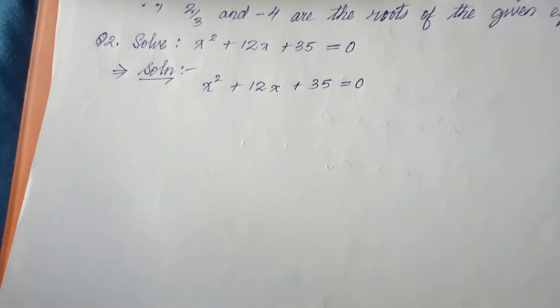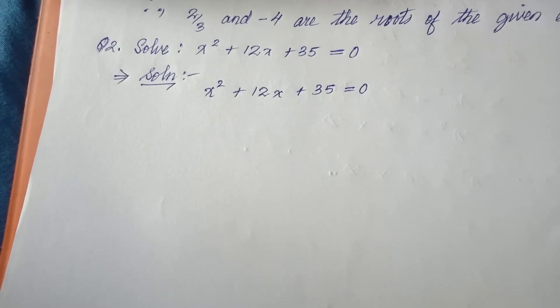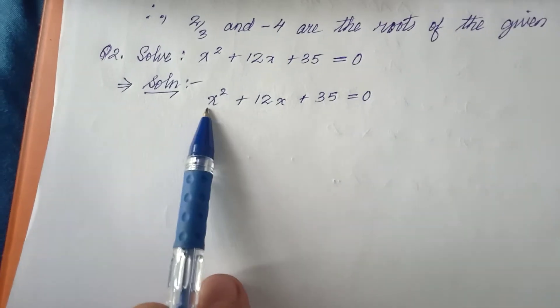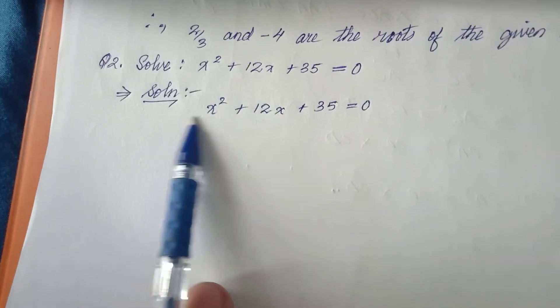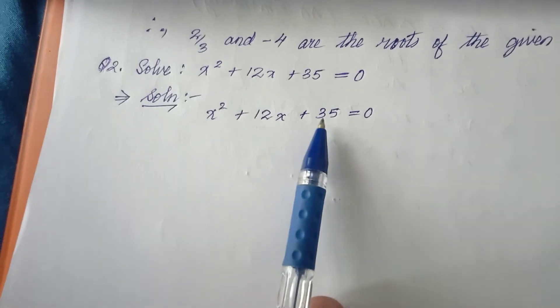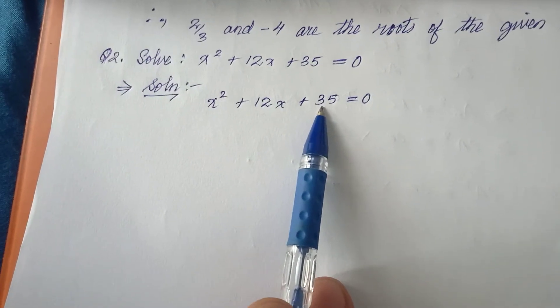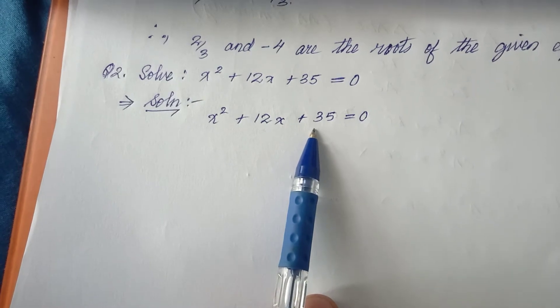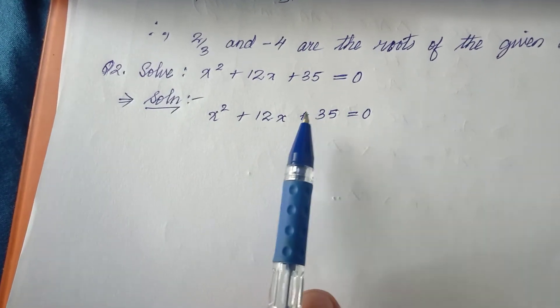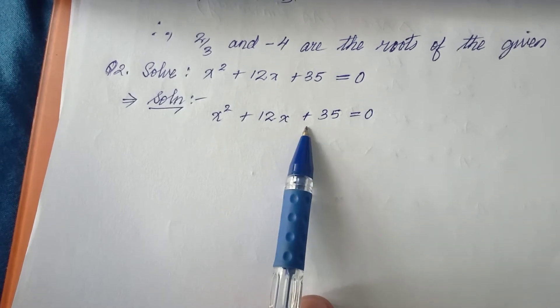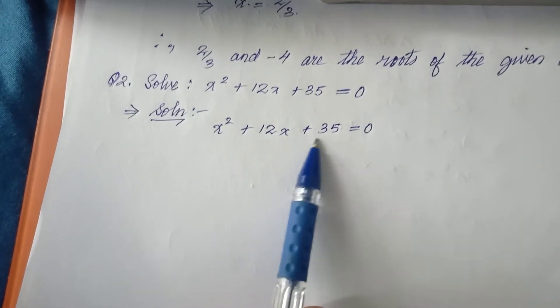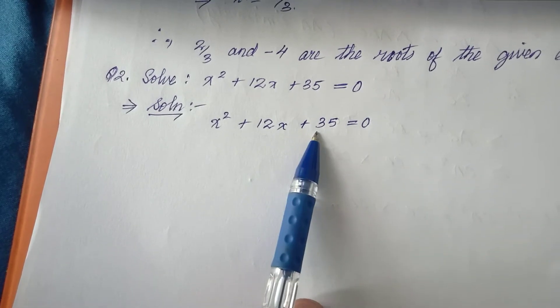Simply, as we have done before, we have to split the middle term. As we can see here, there is no coefficient of x² - it's only 1 - so we don't have to worry about this one. We have to worry about 35. We have to find a number which when multiplied gives us 35, and when we add those two numbers it has to be 12.